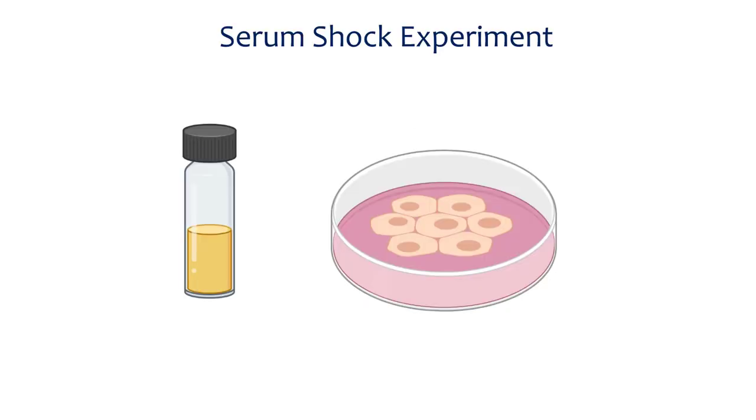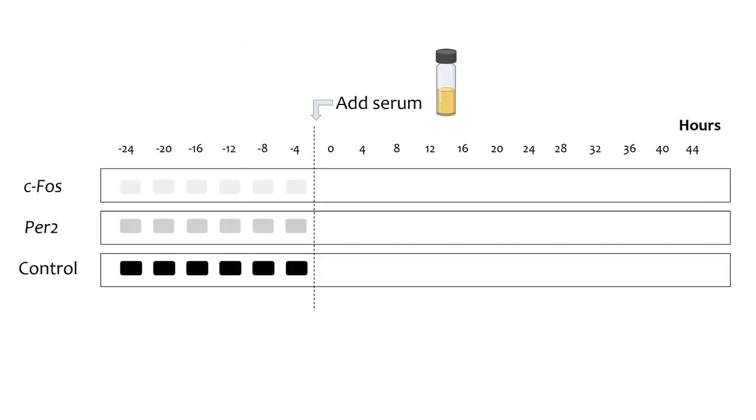Using a technique called serum shock, cells are exposed to a high concentration of serum to activate many cell signaling pathways. The fibroblasts in our previous example were given a serum shock for two hours and then placed in a serum-free environment.